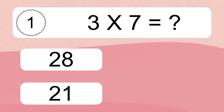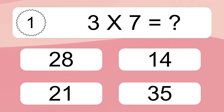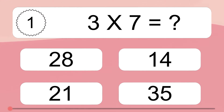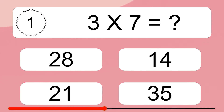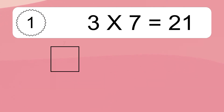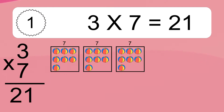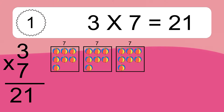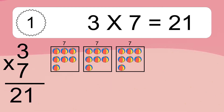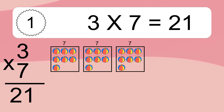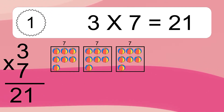Three times seven equals what? Three times seven equals twenty-one. We have three boxes, and each box has seven colorful balls inside. If you count all the balls in all the boxes together, you will have three times seven balls. This equals twenty-one balls.